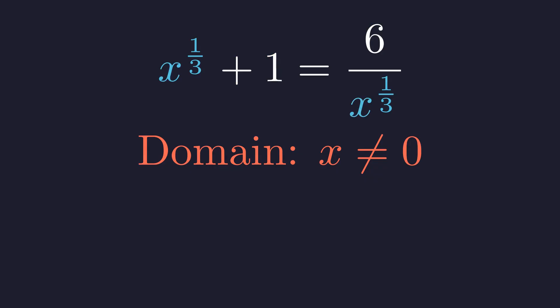Notice how x to the one-third keeps showing up on both sides. Whenever you see this kind of repetition, it's a strong hint that substitution will make your life easier. So let's give this repeated expression a name. We'll call it u, where u equals x to the one-third. Now watch what happens when we make this substitution. The equation becomes much friendlier. u plus one equals six divided by u.